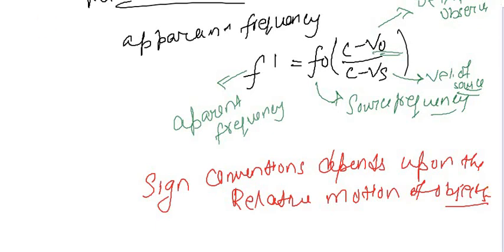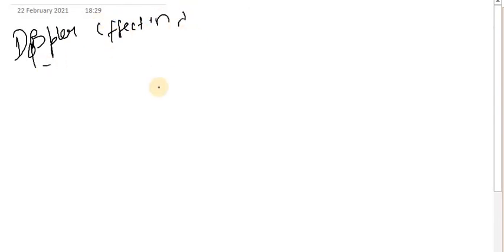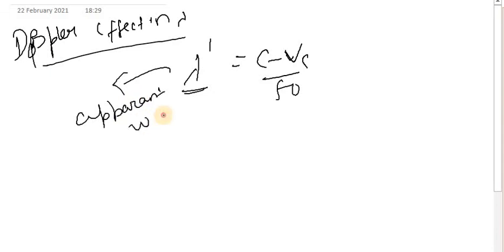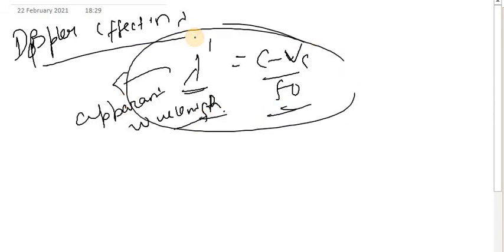The Doppler effect in wavelength: the apparent wavelength is lambda' = (c − v_source) / f₀. This is the apparent wavelength. With this, we have completed sound waves. From the next lecture, we will start with KTG and thermodynamics — KTG refers to Kinetic Theory of Gases.